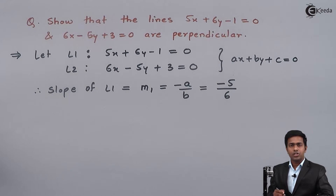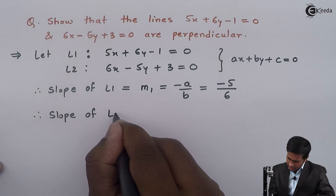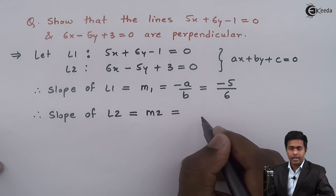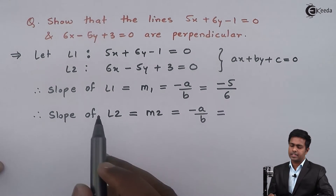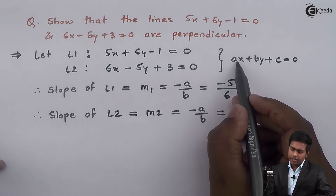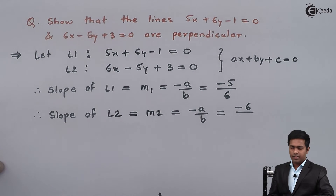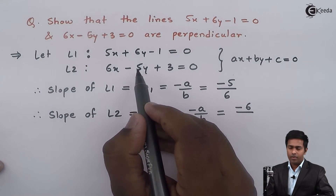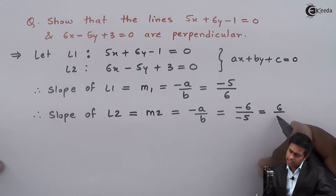Now let us find the slope of the second line. The slope of L2 is M2, equal to minus A upon B — the same formula since the second line is also in the same form. Here A is 6, so the numerator is minus 6, and B is minus 5, so the denominator is minus 5. This gives us 6 upon 5.